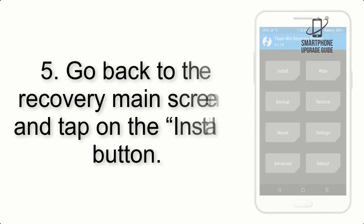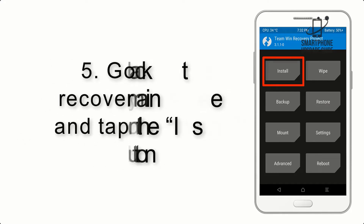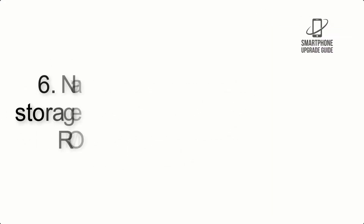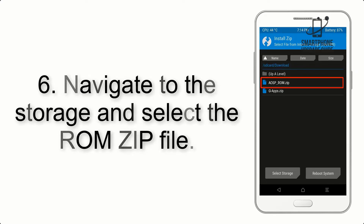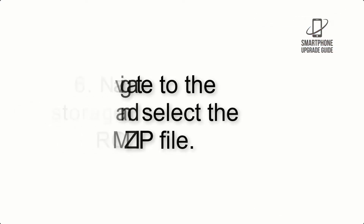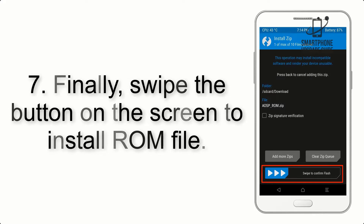Step 4: Swipe the button to wipe the device. Step 5: Go back to the recovery main screen and tap on the Install button. Step 6: Navigate to the storage and select the ROM zip file.